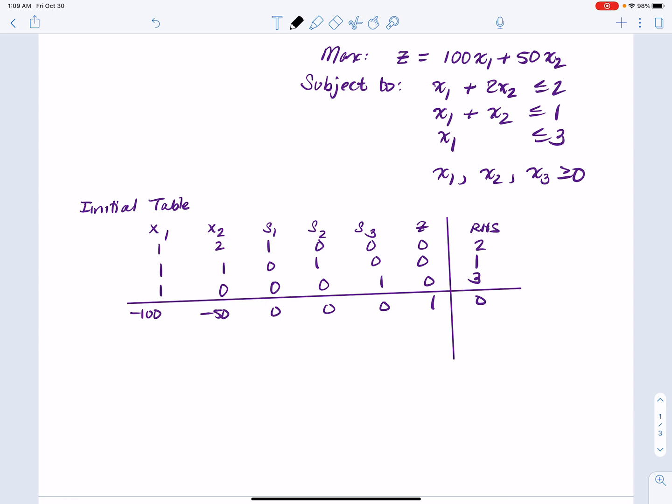So the first constraint got the S1, as you can see. First row was 1, 2, followed by a 1. Rest of the zeros and then 2, and so on. So we have the first three rows being the constraints. Last row, remember, we converted to the negatives, x1 and x2, because those negative indicators tell us that we have more work to do as far as maximizing z. So this is our initial setup.